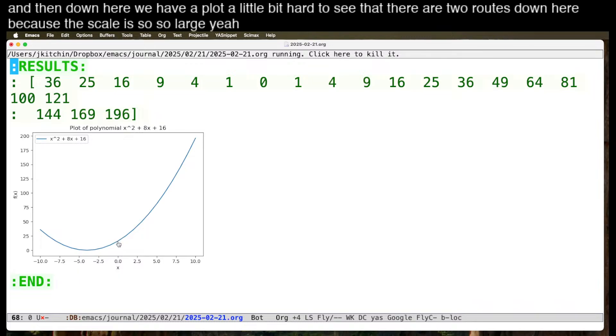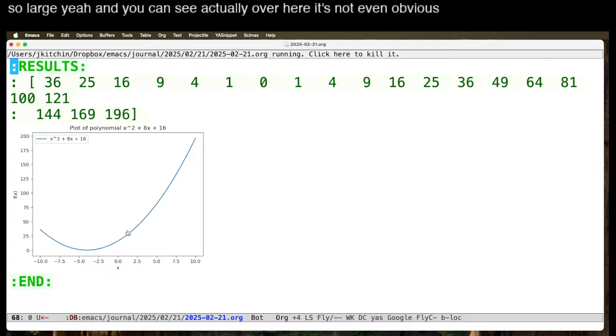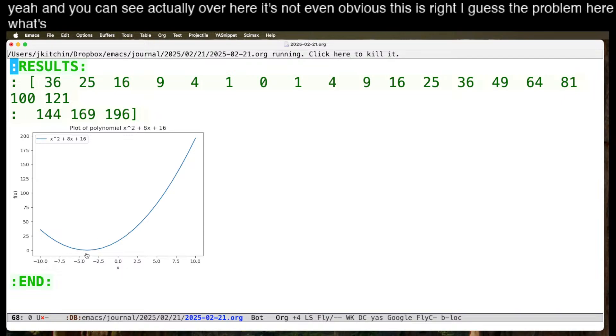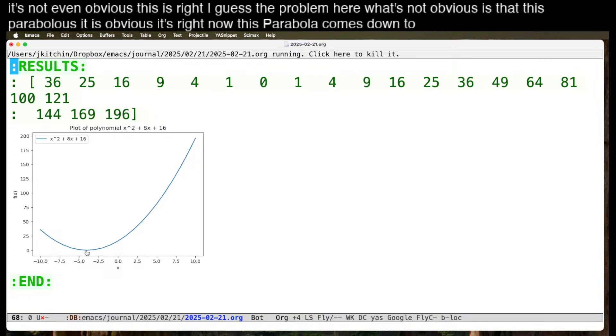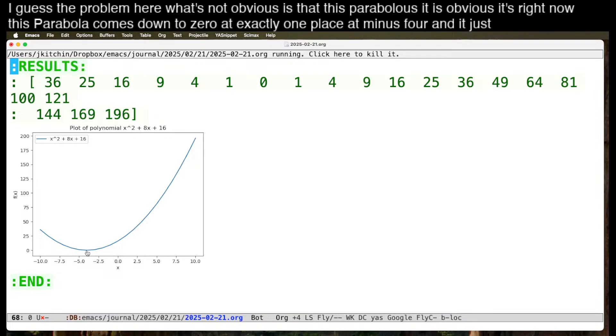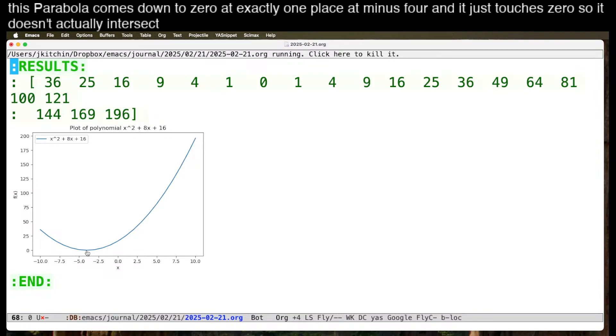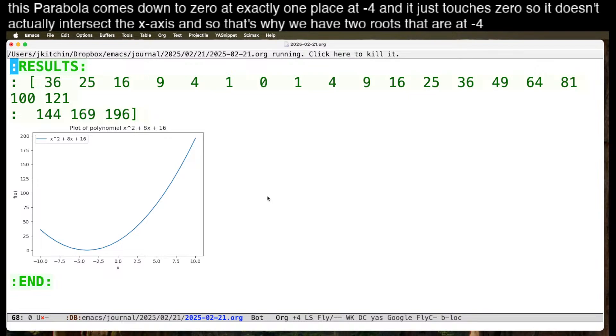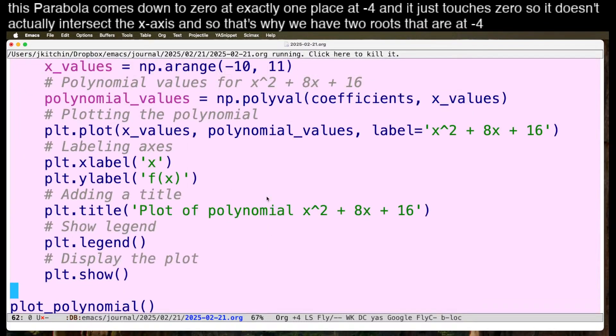It's a little bit hard to see that there are two roots down here because the scale is so large. And you can see actually over here, it's not even obvious this is right. I guess the problem here, what's not obvious is that this parabola, it is obvious, it's right now. This parabola comes down to 0 at exactly one place at minus 4, and it just touches 0. So it doesn't actually intersect the x-axis, and so that's why we have two roots that are at minus 4.